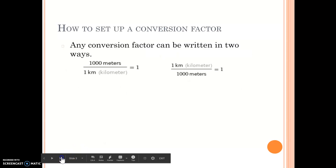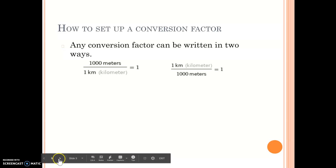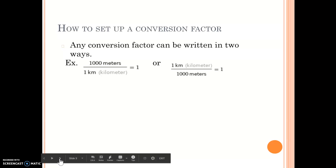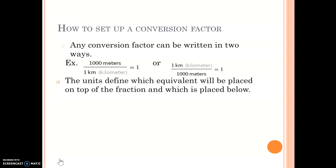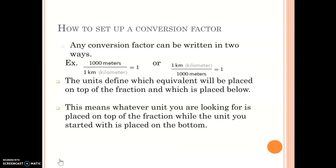The next question is: how do you know how to set up a conversion factor? Any conversion factor can be written in two ways. For example, 1000 meters over 1 kilometer can also be written as 1 kilometer over 1000 meters, and they both equal 1. The units define which variable goes on top and which goes on the bottom. What you're looking for is always going to be on top of the fraction, and what you are given goes on the bottom.